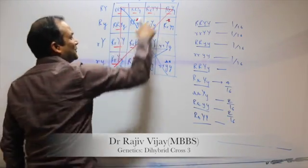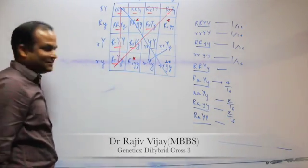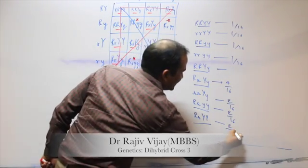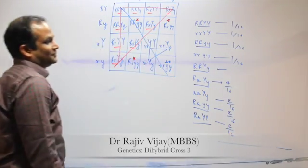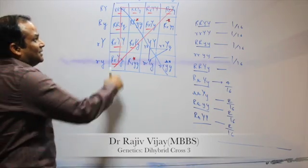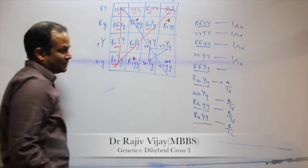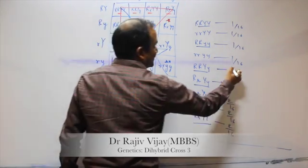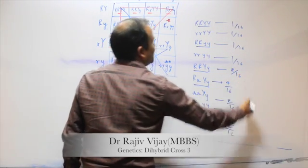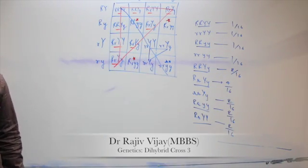Then after that, this one — same, 2 by 16. Now what is it? This and this one — how is it? 2 by 16. How much is it? 2 by 16.